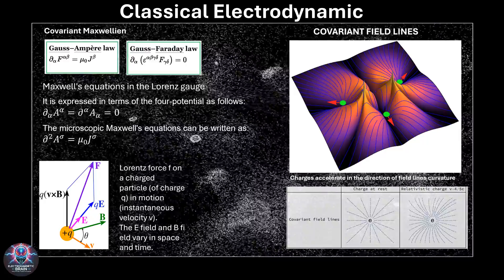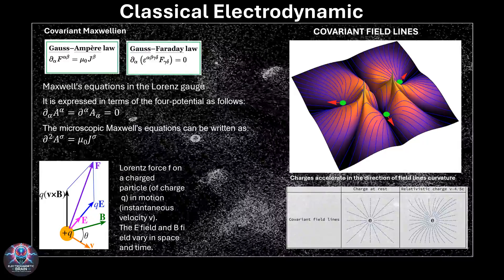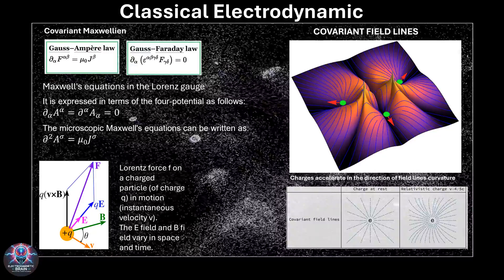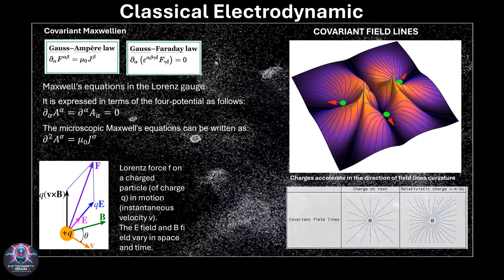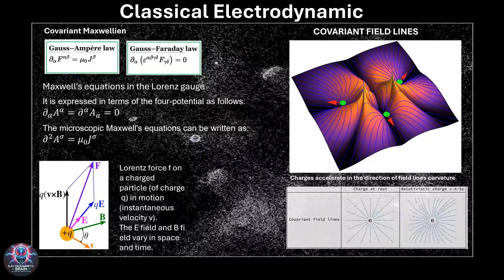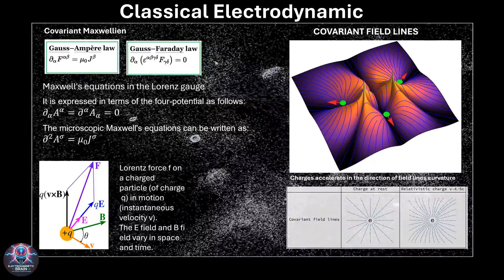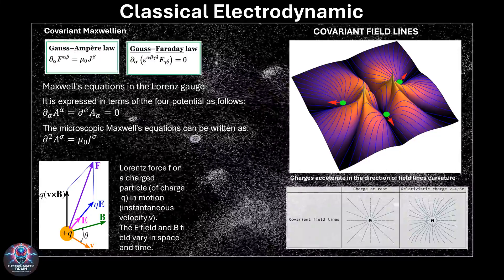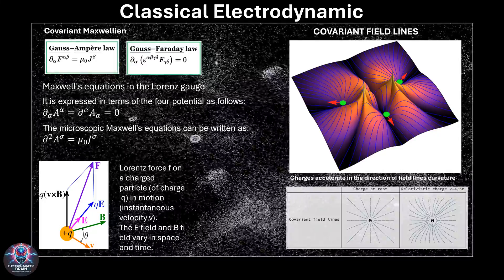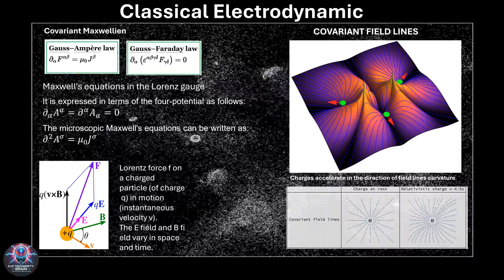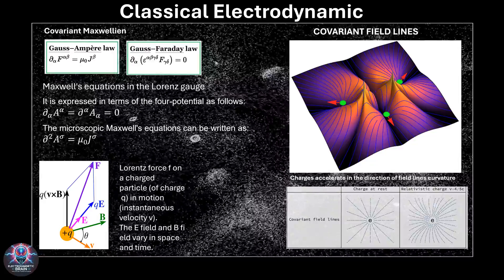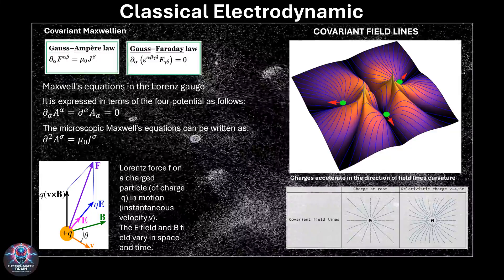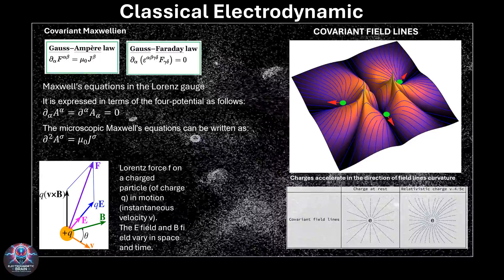With Maxwell's equations in place, scientists now had a powerful mathematical tool to describe electromagnetic waves, but an even deeper revolution was on the horizon. In the early 20th century, Albert Einstein redefined the way we perceive space and time with his theory of special relativity. This theory revealed that electric and magnetic fields were not independent forces but were instead part of the same electromagnetic entity, shaped by the motion of observers. Imagine an electron at rest, it produces an electric field, but if we move past it at high speed, we see something new: a magnetic field. This means that what one observer perceives as an electric field, another might see as a magnetic field.